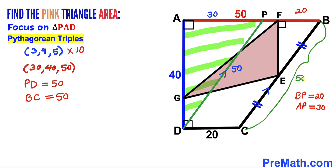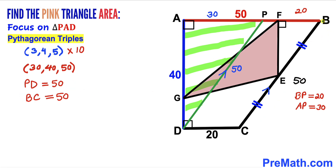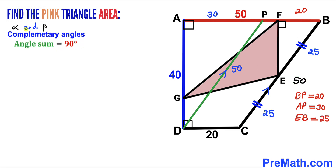Now, since EB equals EC, each segment is half of BC. Half of 50 is 25, so EB equals 25 units and EC equals 25 units as well.